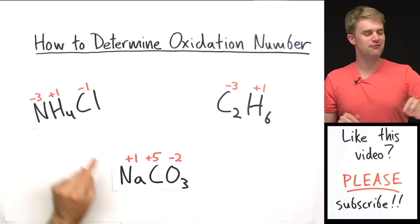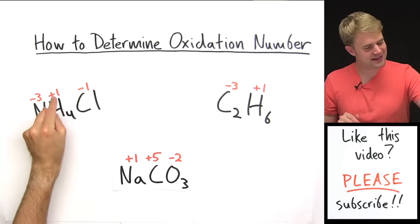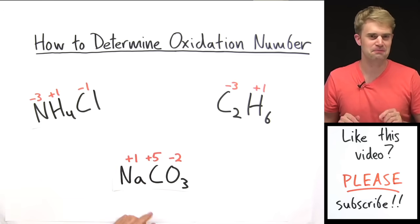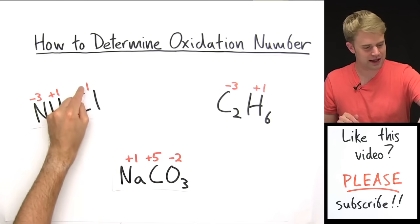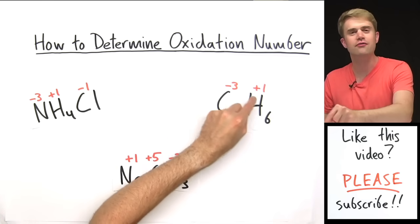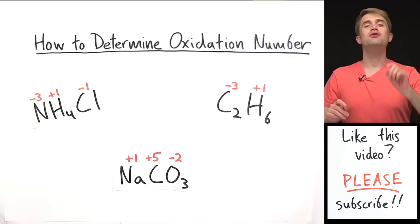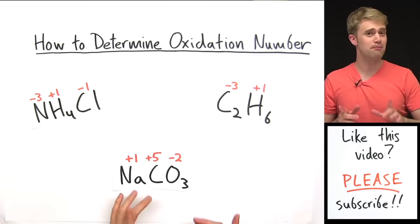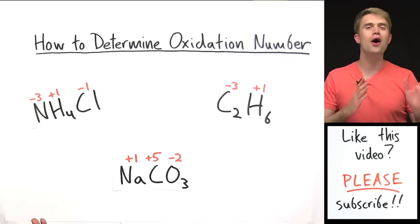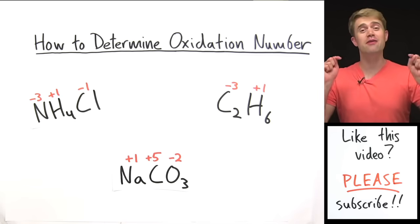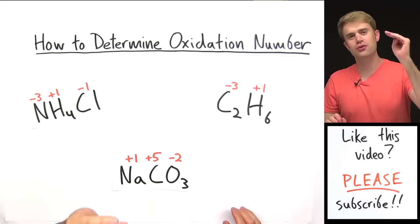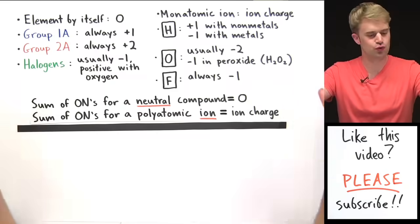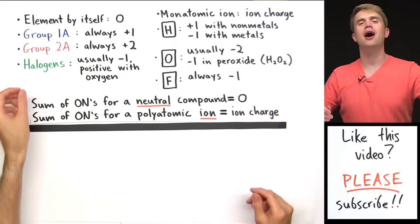In this video, we're going to learn how to figure out the oxidation numbers for the different elements in a chemical compound. The oxidation numbers are the numbers written above each one of the elements. If you want to learn more about what oxidation numbers are or why they're important, check out my video called 'What Are Oxidation Numbers?' Here we're going to work through the process of how you figure out what these numbers are. Here are the rules we're going to use.